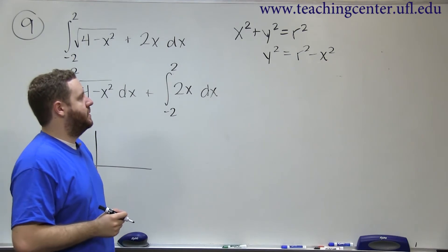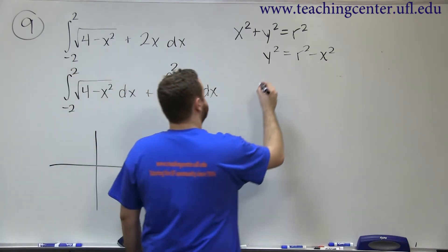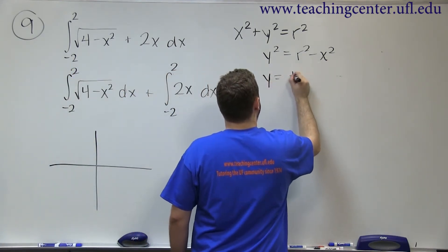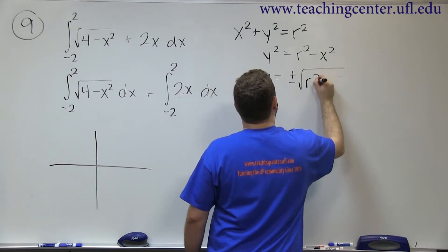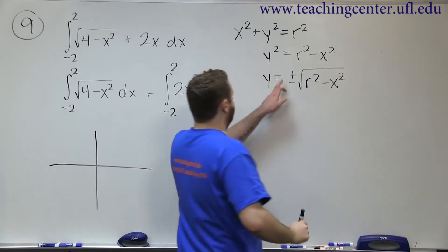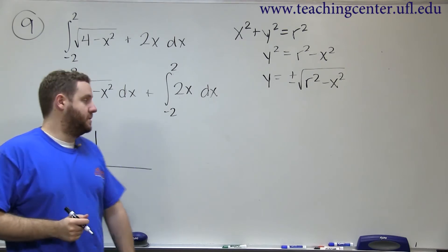But if you wanted to solve for y, you'd have to take the square root of both sides, but you have to do plus or minus. So the plus part is the top half of the circle, and the minus part is the bottom half of the circle.